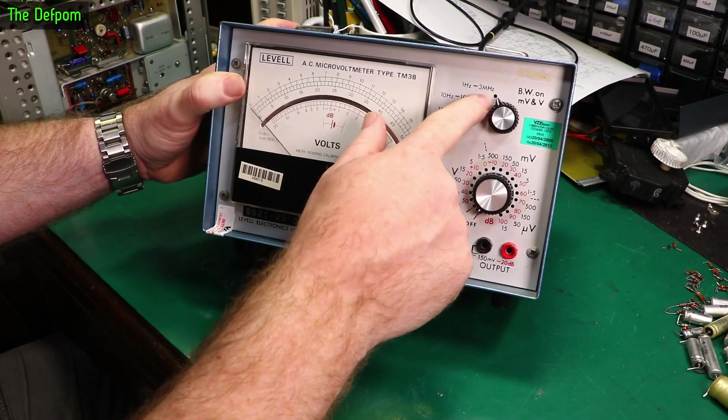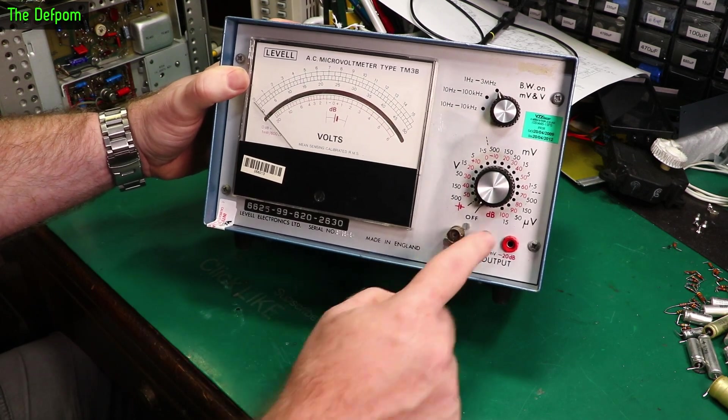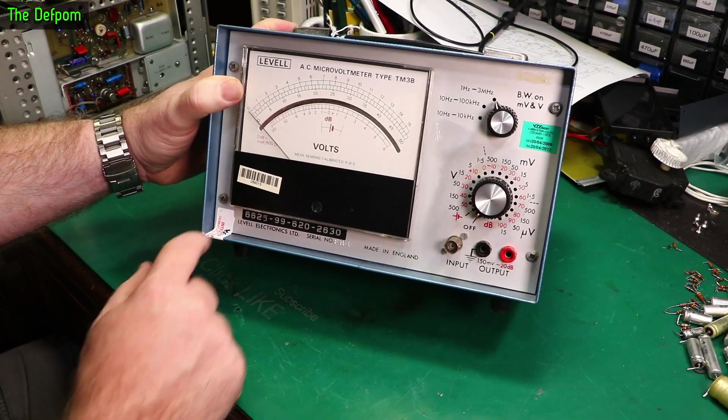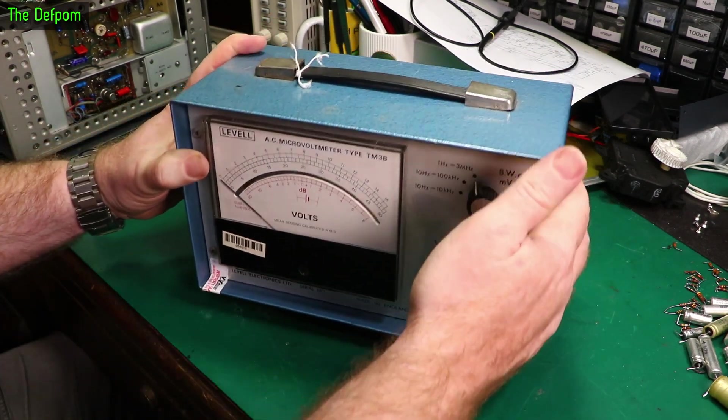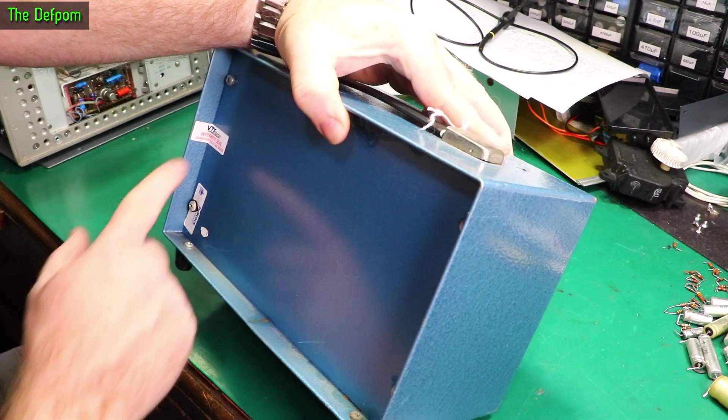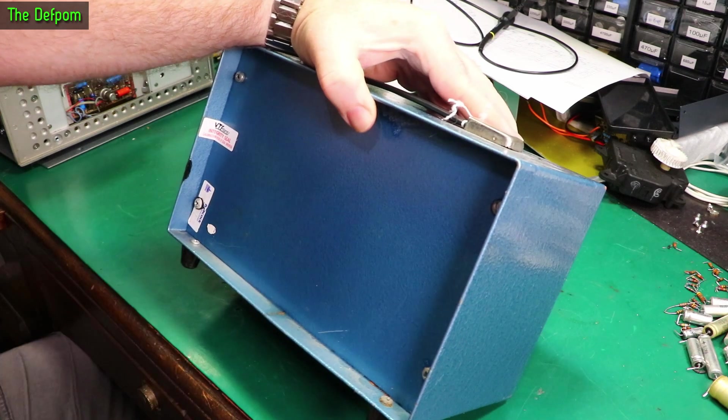It's got bandwidth up to three megahertz and sensitivities right down to 15 microvolts full scale, which is pretty impressive. It's got calibration seals on it, front and rear, sealed by VT Fitzroy.